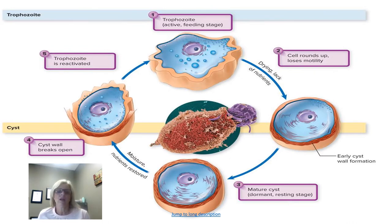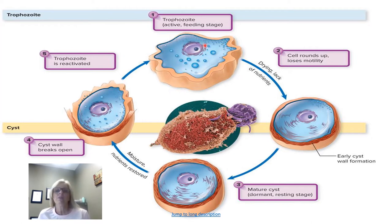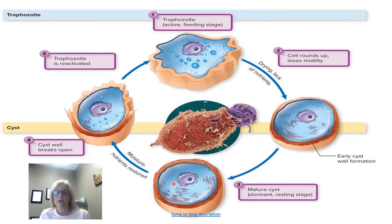Here we see the general life cycle exhibited by many different protozoa. The first stage is the trophozoite — the active feeding stage. When environmental conditions are not favorable, like too dry or lacking nutrients, the cell rounds up, loses motility, and becomes a cyst. This is early cyst formation, and here it is fully developed into a cyst — that dormant resting stage. With the return of favorable conditions, the cyst wall breaks open and the trophozoite becomes active again.